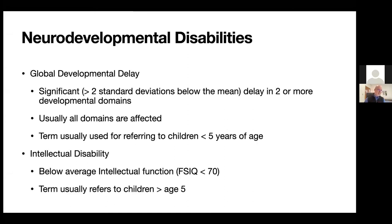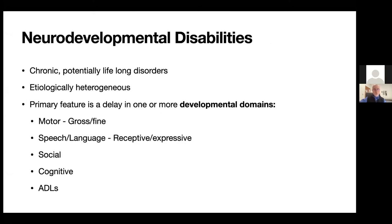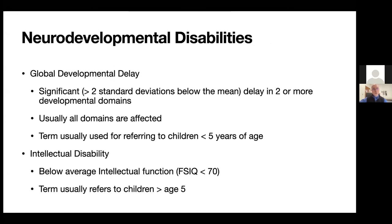When we say that a child has a global developmental delay, what that really means is that they have significant delays — typically two or more standard deviations in two or more of those developmental domains. So two or more of the five domains — motor, speech, social, cognitive, ADLs — are affected, and oftentimes they're all affected.